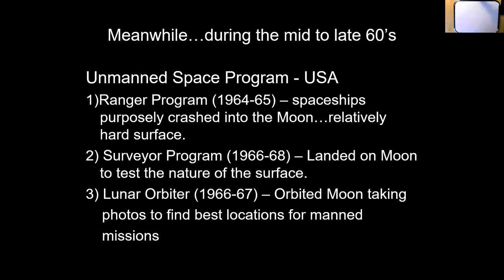During the mid to late sixties, even though the Russians beat us everywhere else, we could still beat them to the moon. But first we had to send unmanned spacecraft there - take pictures of the best landing sites, make sure a lander won't sink into soft soil. So we sent the Ranger up there to purposely crash into the moon, the Surveyors that soft-landed to test the surface, and the Lunar Orbiter to orbit the moon and find the best locations to put people down.